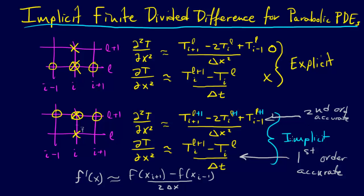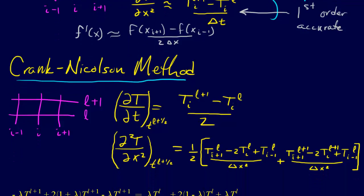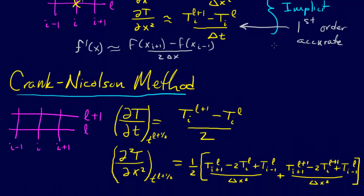So this whole approach with trying to do this and make it second order accurate on both is called the Crank-Nicolson method. So this is the first step.